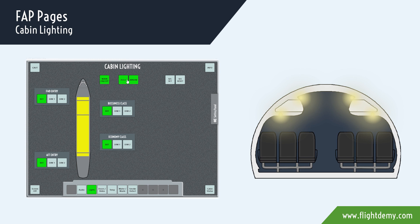At the right, there are two buttons used mainly for maintenance purposes. The first one, reading light set, turns on all the reading lights in the passenger unit service. The second one, reading lights reset, turns off all the reading lights.